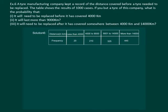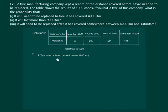Let us read the question. A tyre manufacturing company kept a record of the distance covered before a tyre needed to be replaced. The table shows the result of 1000 cases. If you buy a tyre of this company, what is the probability that it will need to be replaced before it has covered 4000 km? It is given that total trials are 1000. The first part of the question is to find the probability that the tyre is to be replaced before it covers 4000 km.